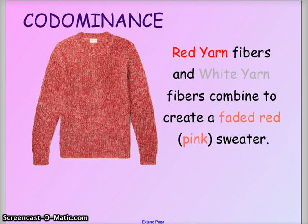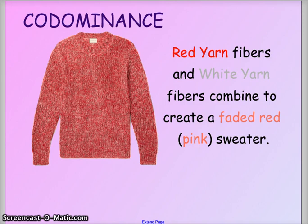This modeled red sweater is created by a combination of red and white yarn. You can distinguish each of the fibers — you can see the red fibers and the white fibers — but when they combine and both are present, you get this faded red, almost pink sweater. The outcome of the combination of the two traits gives you another phenotype that is different from the two parents.